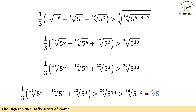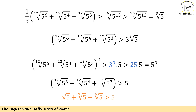So the arithmetic mean is greater than the 36th root of 5 to the power of 13. Since 13 is greater than 12, it follows that this is greater than the 36th root of 5 to the power of 12, which simplifies to the third root of 5. So the arithmetic mean is greater than the third root of 5. Now let's multiply both sides by 3 and then take the power of 3 on both sides.